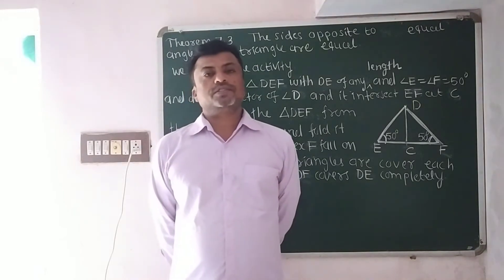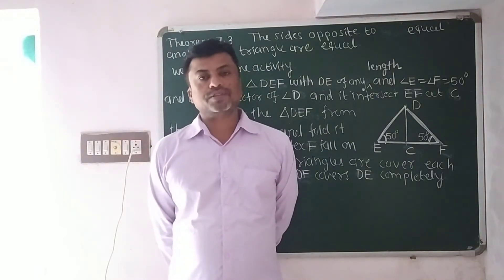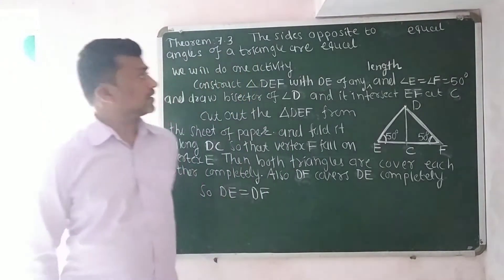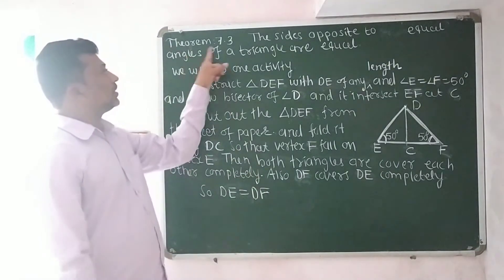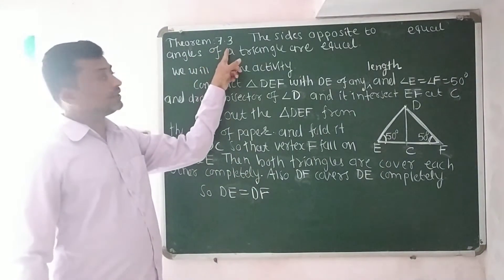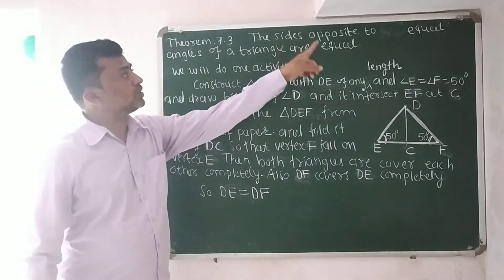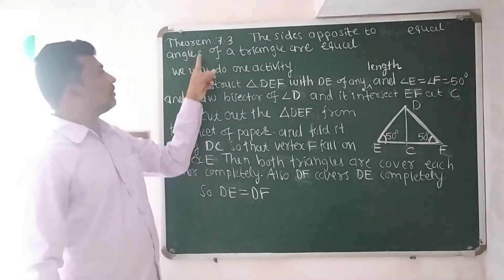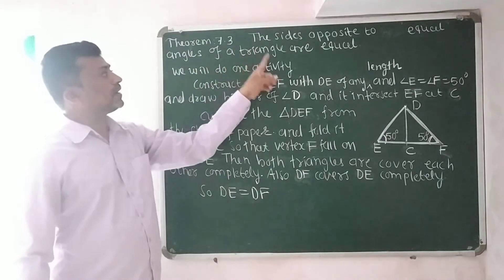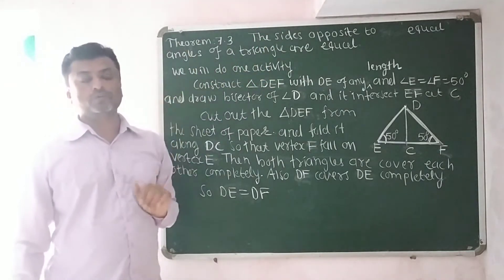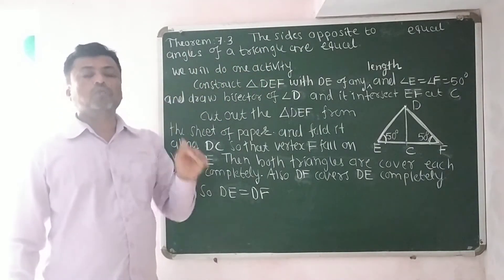Good morning students. Today we will discuss theorem 7.3. Theorem 7.3 states that the sides opposite to equal angles of a triangle are equal — that we have to prove.